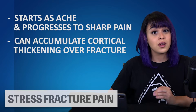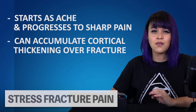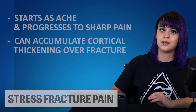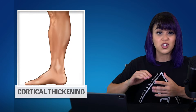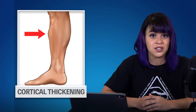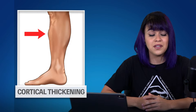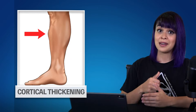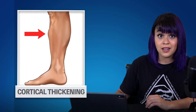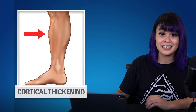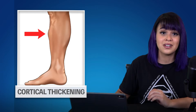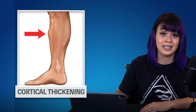You can also develop cortical thickening over the fracture site, which means you might have a physical hard bump protruding from your shin where the fracture is. If you've got one of these bad boys, that means you've probably had your fracture for a while — you might as well give it a name, like Donald.